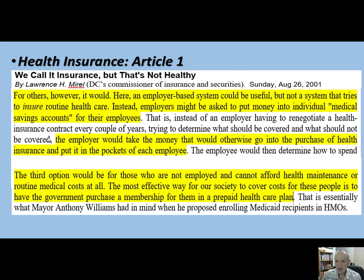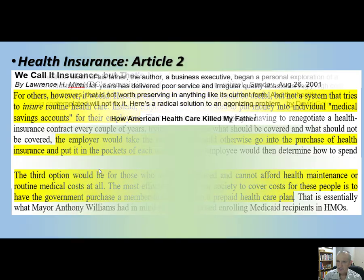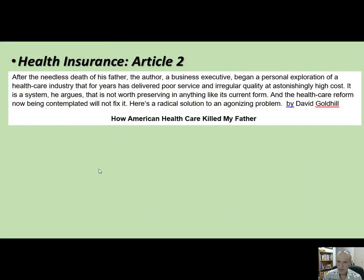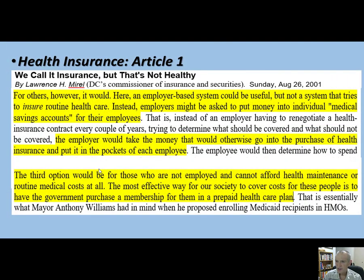A third option would be for very poor people, the working poor, people without employment, or those who are homeless—the government would have a membership prepaid health plan for them because routine healthcare could be out of reach for them financially. Large employers have already started doing high-deductible plans with health savings accounts. The first article provides a lot of introductory information, especially related to what an insurable event is. His main focus is on this two-tier solution, which still involves an employer-based system but only for catastrophic care.